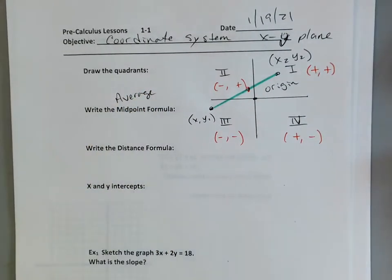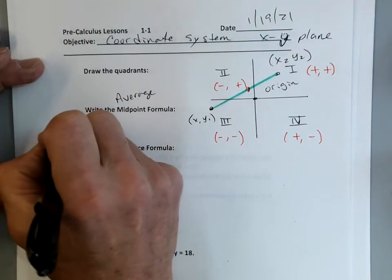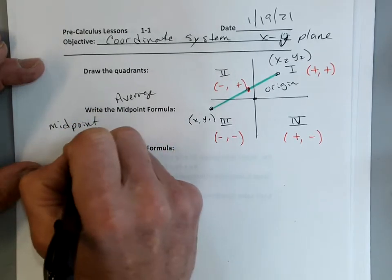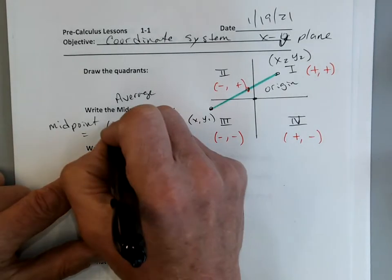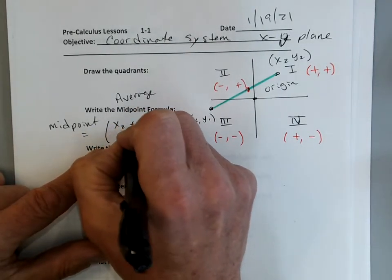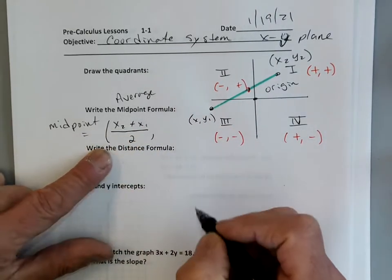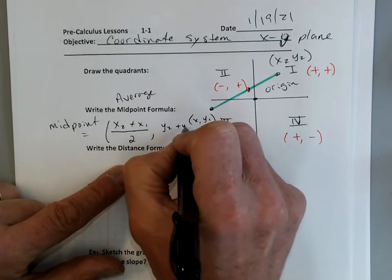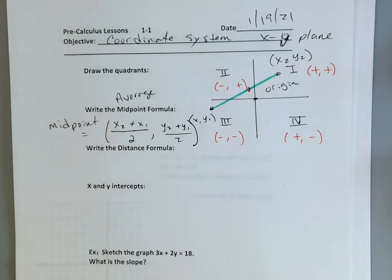We know how an average works — you add them up and divide by 2. So my midpoint formula is going to be equal to a point: it's X2 plus X1 divided by 2, comma, Y2 plus Y1 over 2. That's my midpoint formula.